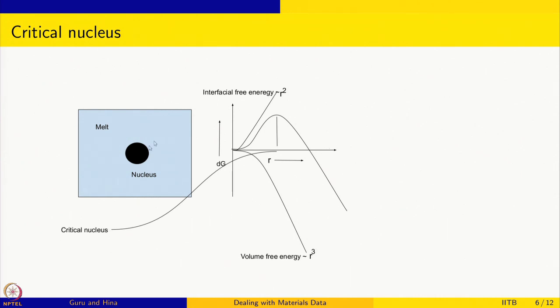So there is a critical size, and beyond that size the nucleus will grow. Particles smaller than R* are called embryos — they keep forming and dissolving back into the melt. Particles above the critical size are called nuclei, and they can grow. The process of forming stable particles from the melt is known as homogeneous nucleation.